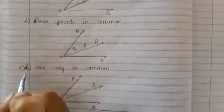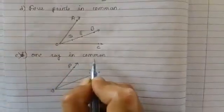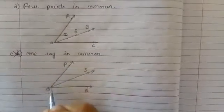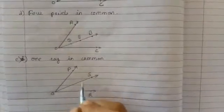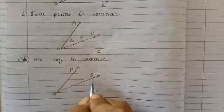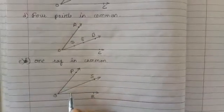Next one is one ray in common. The two angles are PQS and RQS and ray QS is common in both the angles.